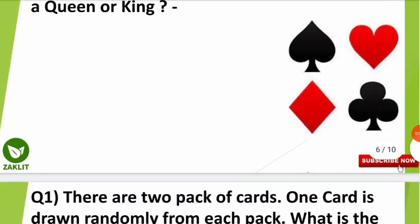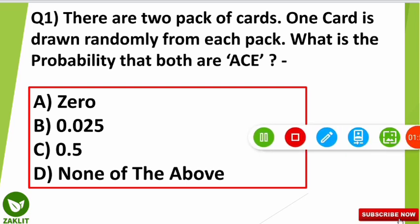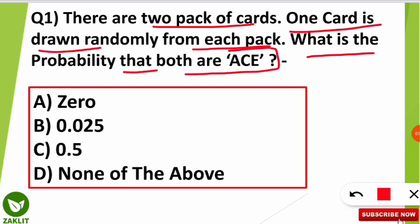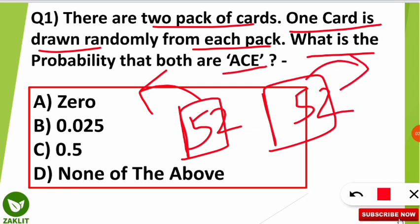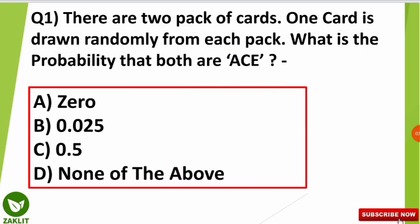Now we look at the AND case. The question is: there are two packs of cards and one card is drawn randomly from each pack. What is the probability that both are aces? Both means one ace from the first pack AND one ace from the second pack — so this is clearly an AND case. We will multiply the individual probabilities.